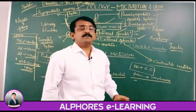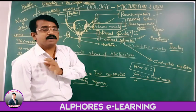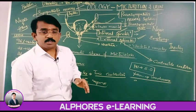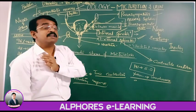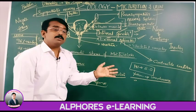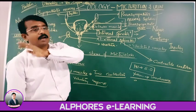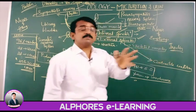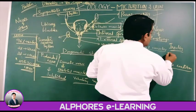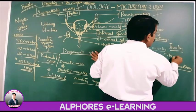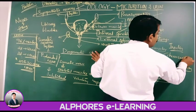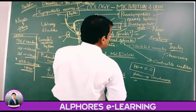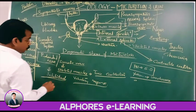So glucose normally does not reach the urine. If insulin deficiency is there, the function of insulin is to convert glucose into glycogen to decrease the glucose level. If insulin is deficient, glucose levels increase, which causes glycosuria.